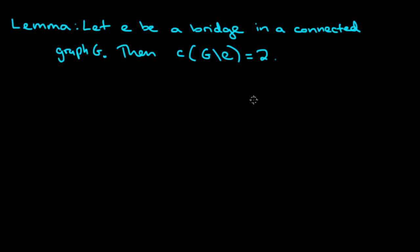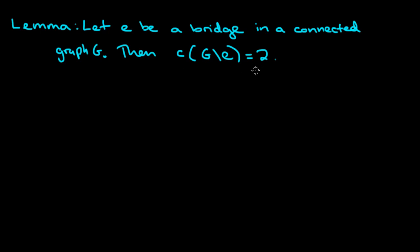When we looked at examples of edges that are bridges, what we noticed was that if the original graph was connected, in every example that we had tried, the number of connected components of the graph after that edge was removed was equal to 2. In this video, we're going to show that this is actually not just a coincidence, but that it's always the case.